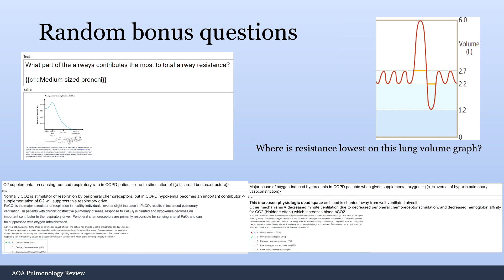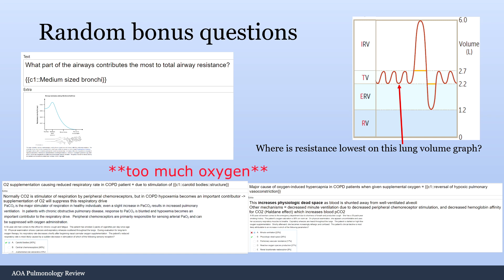Bonus questions: the part of the airways that contributes most to total airway resistance is the medium-sized bronchi. Resistance is lowest at the end of expiration of tidal volume. Regarding COPD: don't give too much oxygen because you can cause respiratory failure — they lose their respiratory drive due to stimulation of the carotid bodies, causing reversal of hypoxic pulmonary vasoconstriction. Blood flow goes to poorly ventilated areas and they can go into respiratory failure from supplemental oxygen.